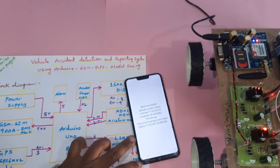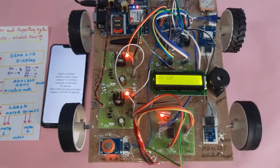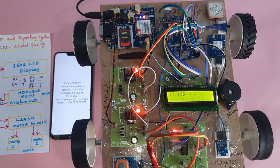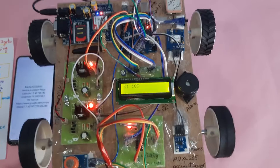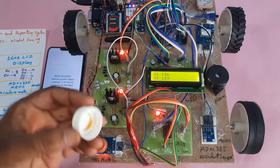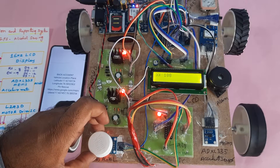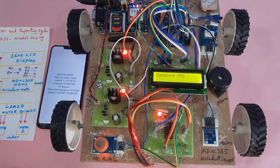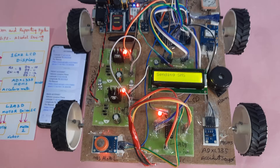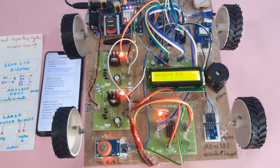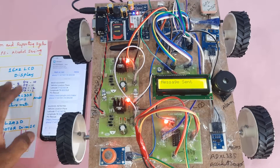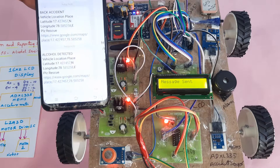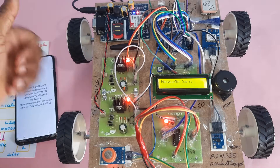If there is any doubt, let me know. Now going for the alcohol sensor again. The sensor reads 200, set point is 180 — above the threshold, so alcohol is detected. SMS alert sent: 'Alcohol detection. Vehicle location place. Latitude value, longitude value.'